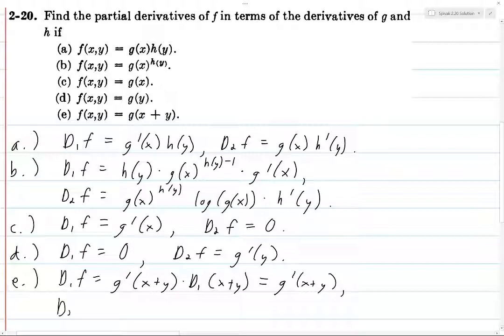And likewise, when you take the derivative with respect to y, we're going to get g prime of x plus y times D2 of x plus y, which is going to be 0 plus 1, which is 1. And so we are left with just g prime of x plus y. And that finishes this exercise.